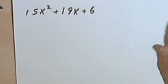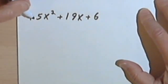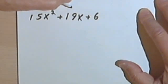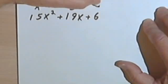So what I'm going to do is use something called the AC method, and here's what it is. We take the first coefficient of 15 and think of that as A. Think of the second coefficient, 19, as B. The third coefficient is going to be C.